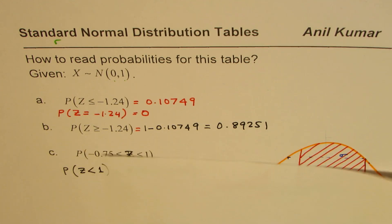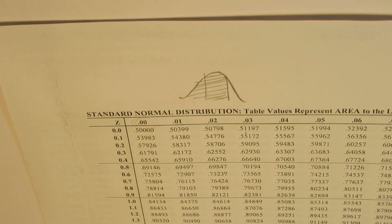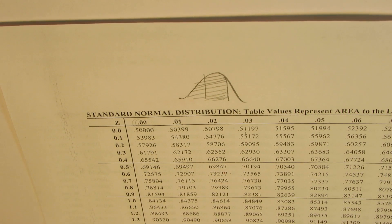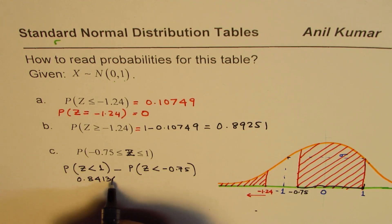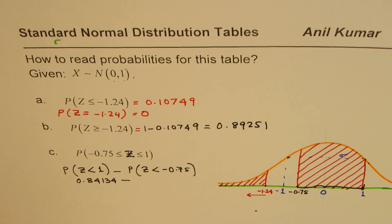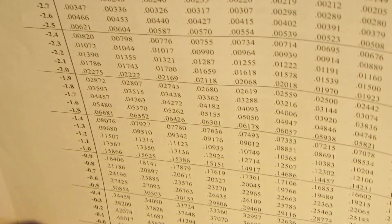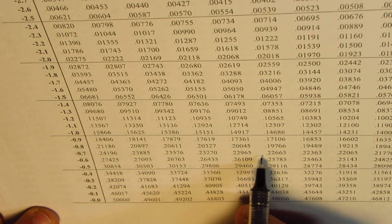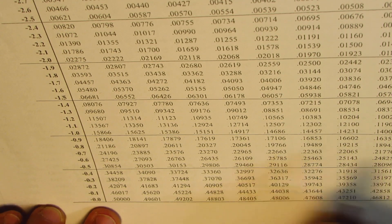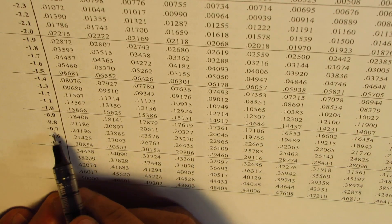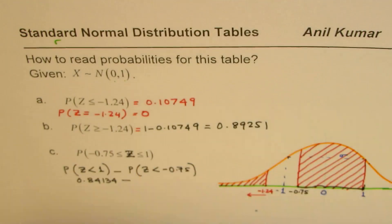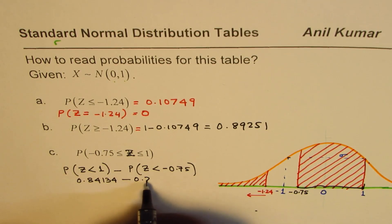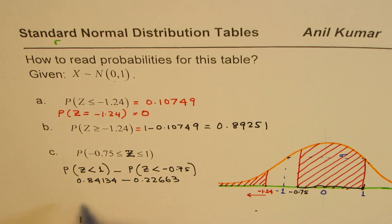So let's look into these two values. Positive values are on the other side of this printed sheet, and for 1 the value is 0.84134. So we will just write this as 0.84134 minus, and for the negative 0.75, let's see, 0.7 and then 5 is right there. 0.22663. So 0.22663. Their difference is the answer.